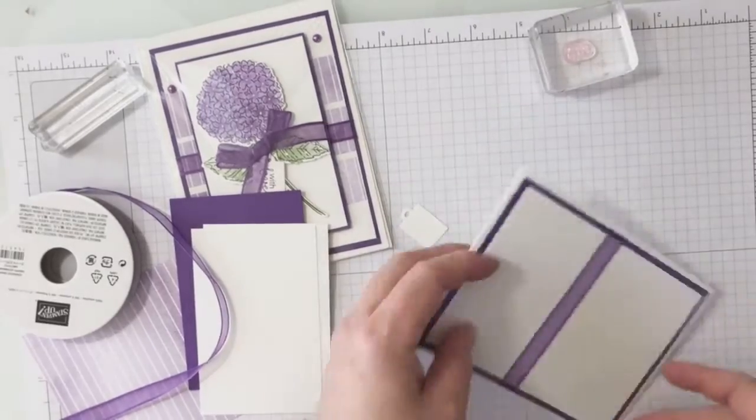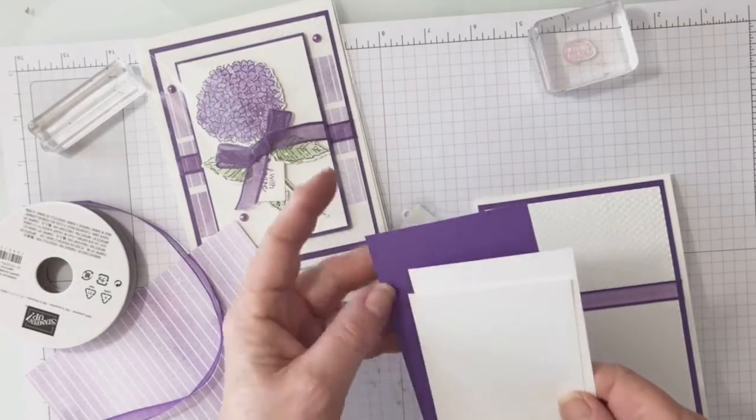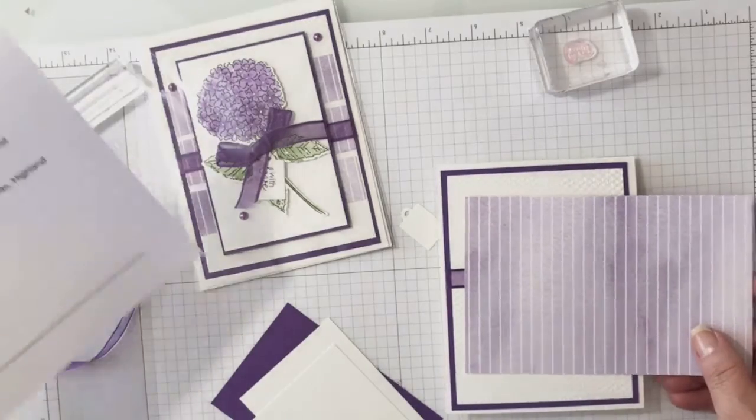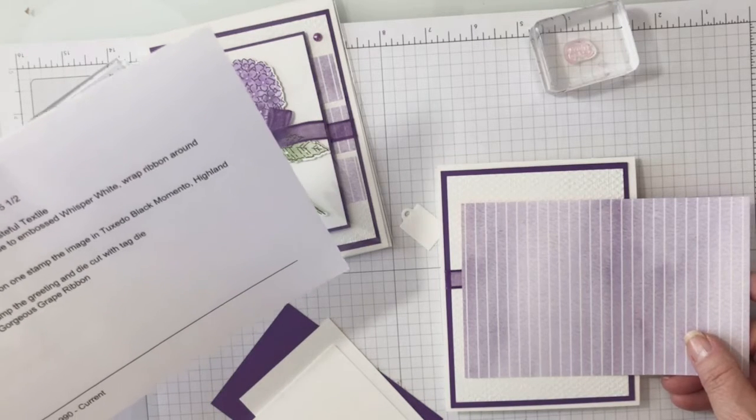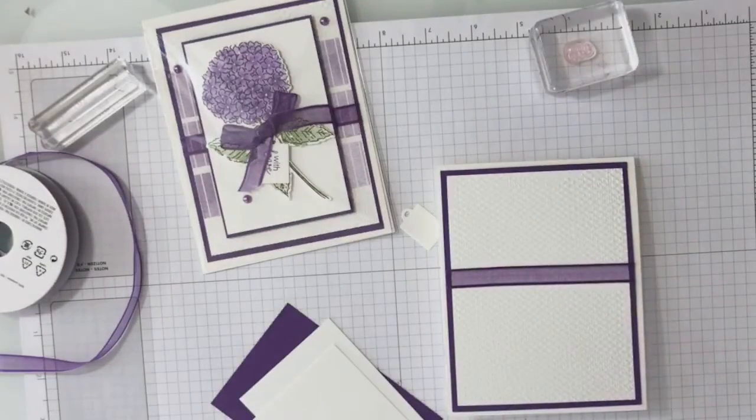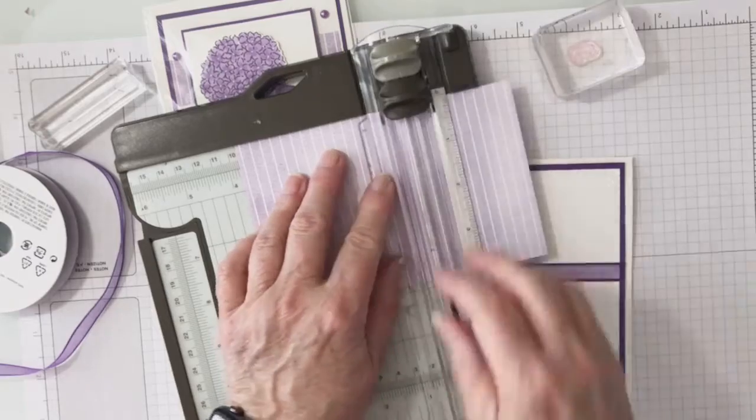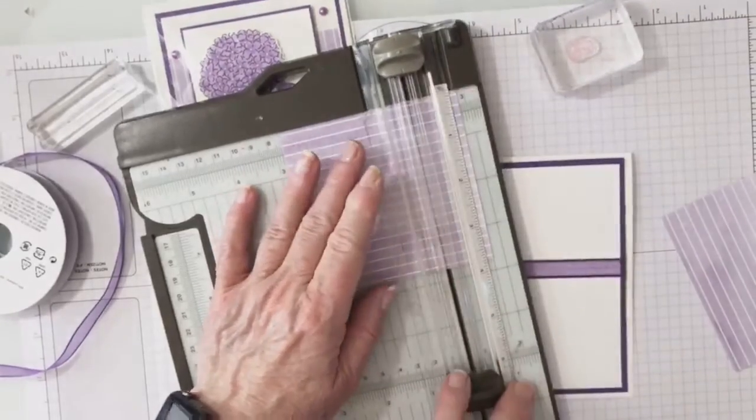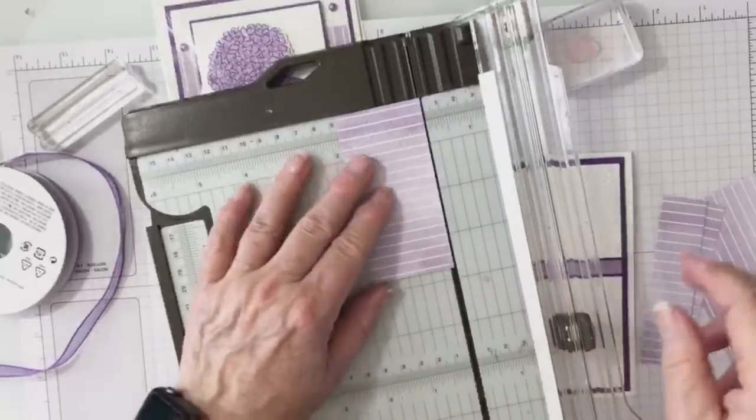Alrighty, and then you have two pieces of this white and another one of the gorgeous grape. Oh no, I forgot to cut my paper, sorry guys. So we're going to cut the designer series paper. I'm going to cut it at three. We're going to cut three of them at one by three and three quarters, so these are three separate pieces. I'm just going to cut three of them at one inch. There's one, there's two, and there's the third one.